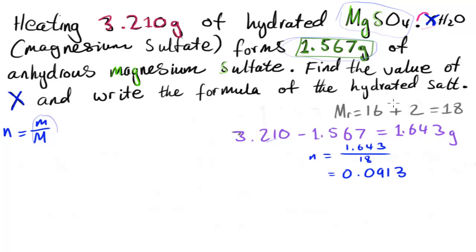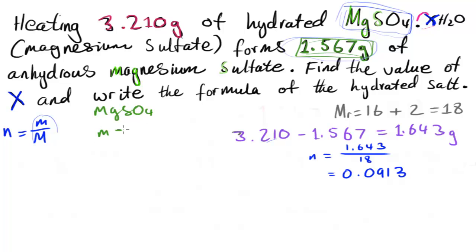Now we do the same with MgSO4. We need the moles of MgSO4 so we can find the ratio between moles of H2O and moles of MgSO4 — that ratio will give us x. The mass of MgSO4 is 1.567 grams, and we need to work out its molar mass from the periodic table.